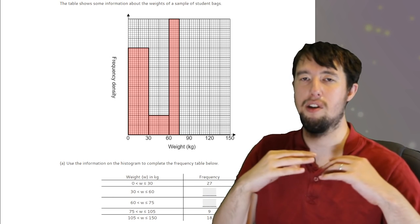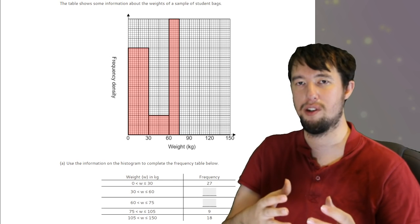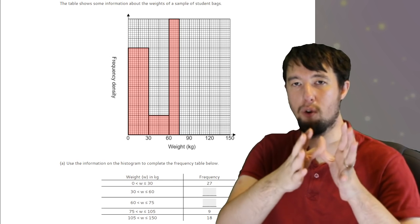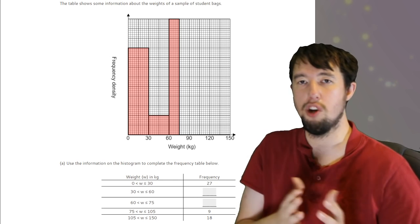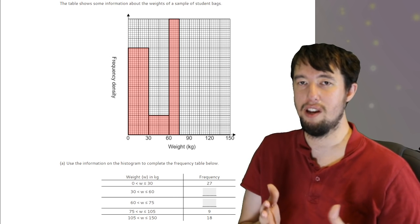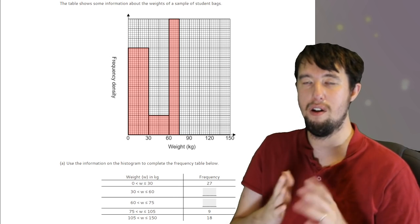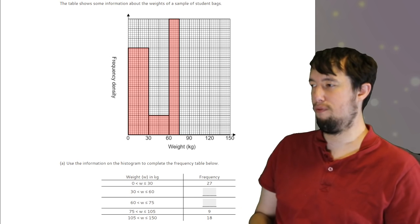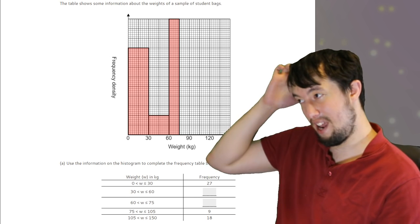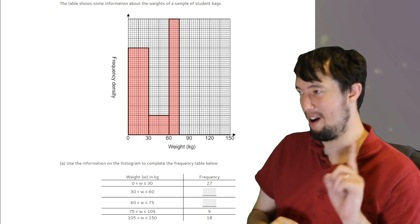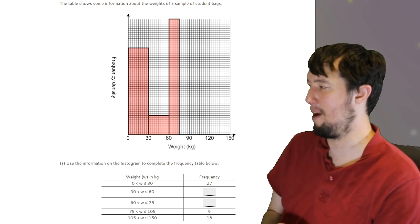But for continuous data, when it's to do with histograms, cumulative frequency, things like that, or for grouped data, you don't have to add one on. It's controversial, I know, but what can you do? This isn't anything to do with median, but I just thought I'd highlight that point because a lot of you asked about that.